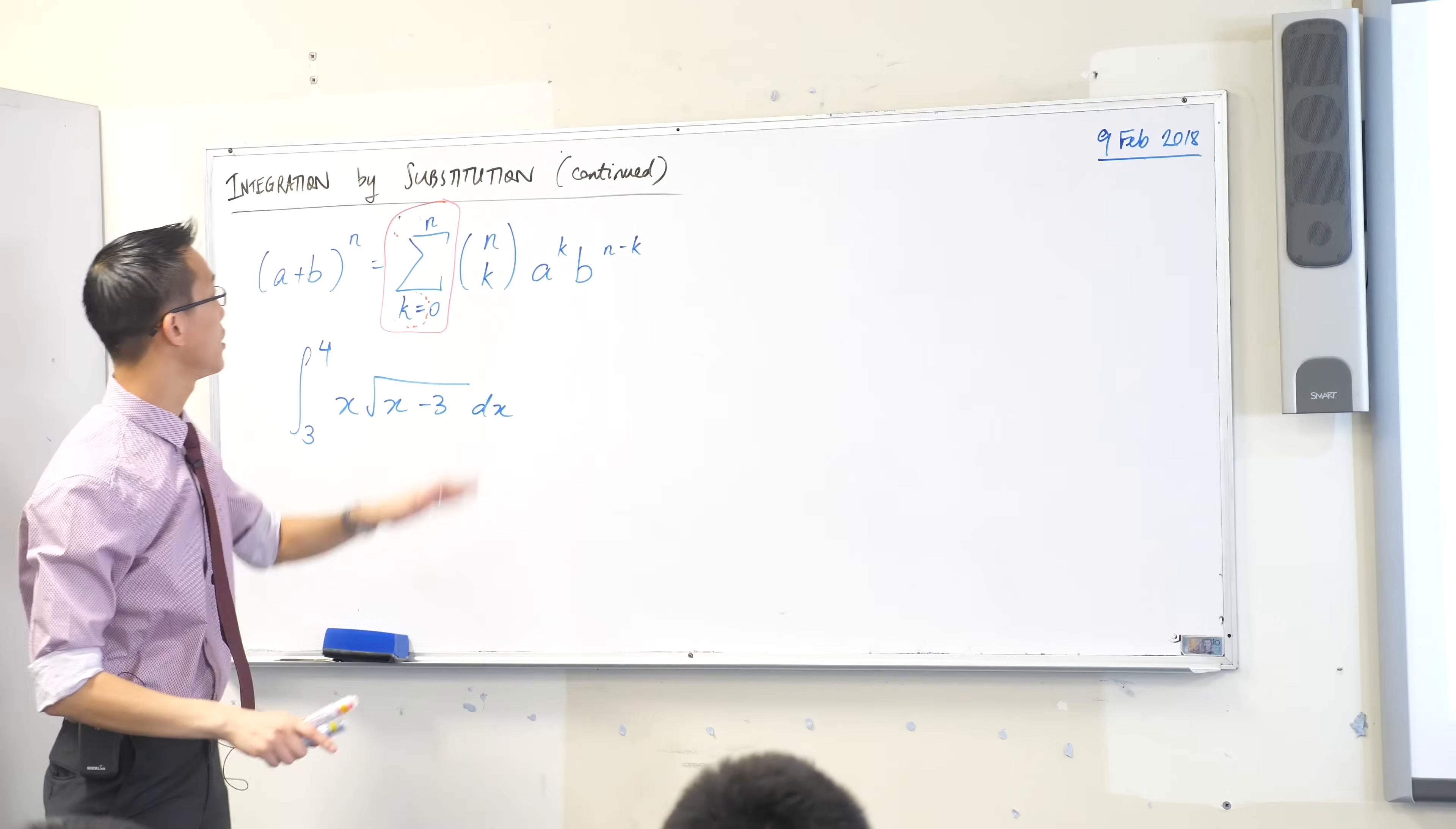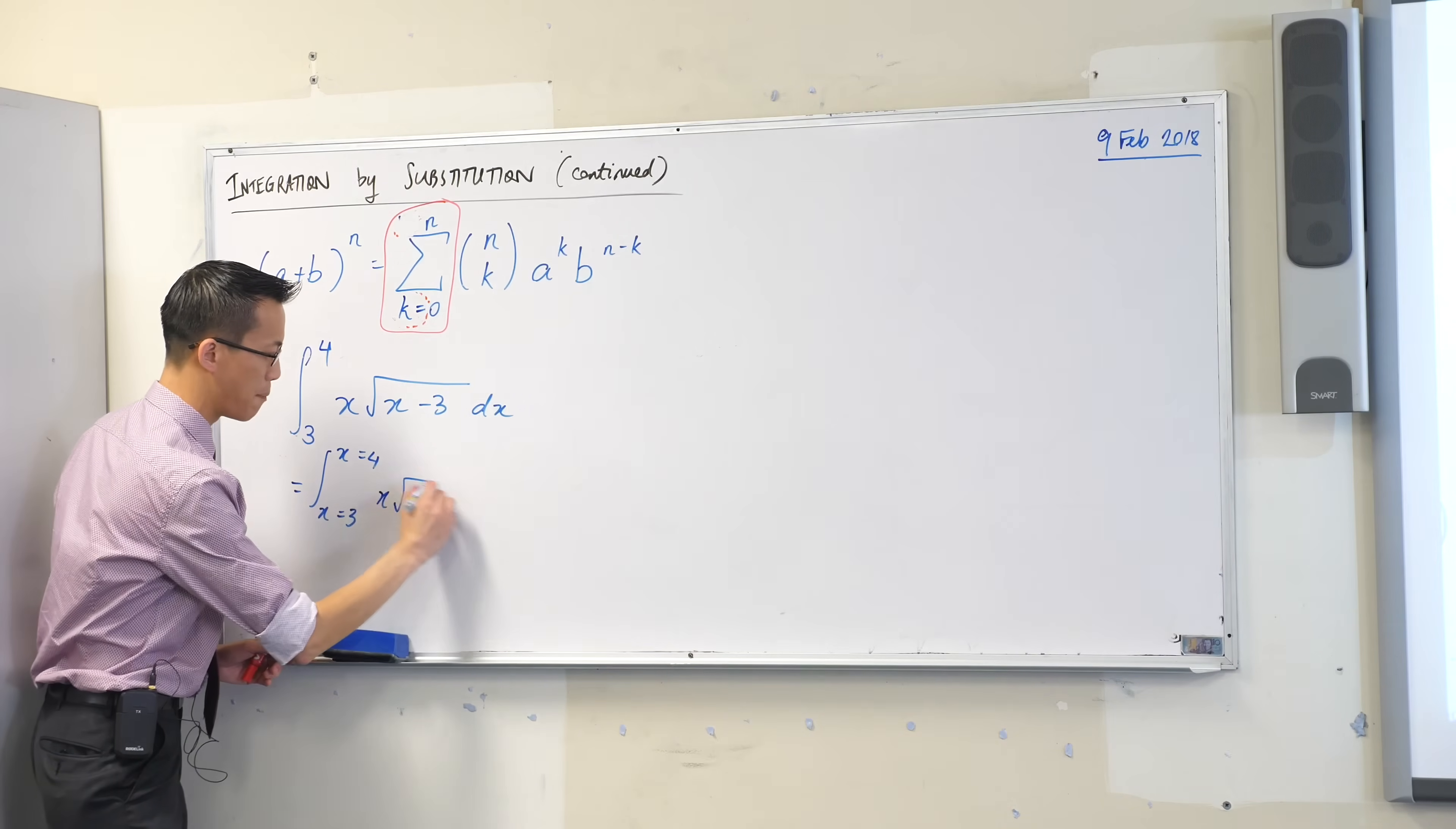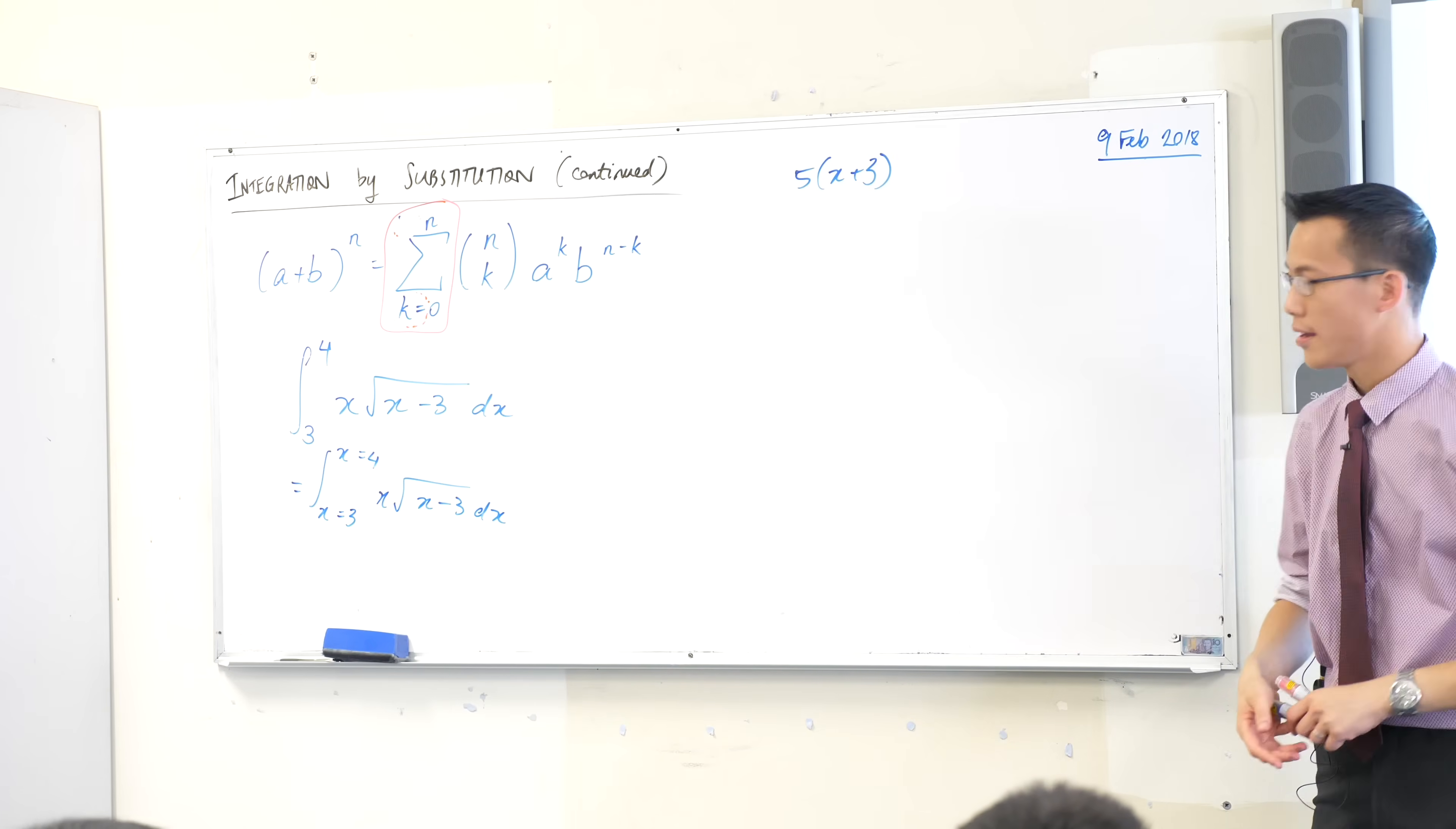However, and this is really important for what we're about to do today, and I actually want you to write this on the next line, that labeling of those boundaries is actually implied. We don't need to write it because everyone knows where the three and the four are going to go, but it's actually there. It's kind of hiding. Just like when you have something like this. There's a multiplication sign hiding between the five and the bracket, but we kind of assume that we don't have to write it. So it's implied. It's important.